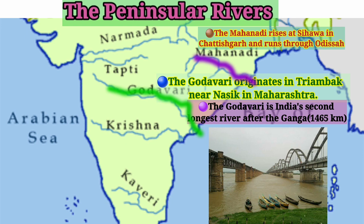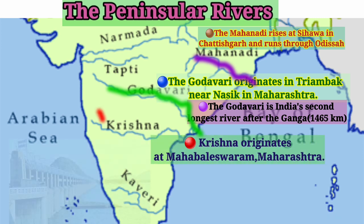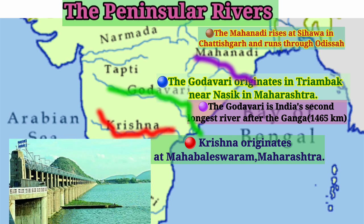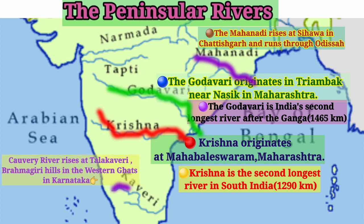Godavari is the longest river in South India. Krishna originates at Mahabaleshwar in Maharashtra and flows through Andhra Pradesh, finally joining the Bay of Bengal. Krishna is the second longest river in South India. Kaveri takes birth at Talakaveri in Brahmagiri Hills in Karnataka. Mahanadi, Godavari, Krishna, and Kaveri all take birth in the Western Ghats and flow west to east, finally joining the Bay of Bengal.